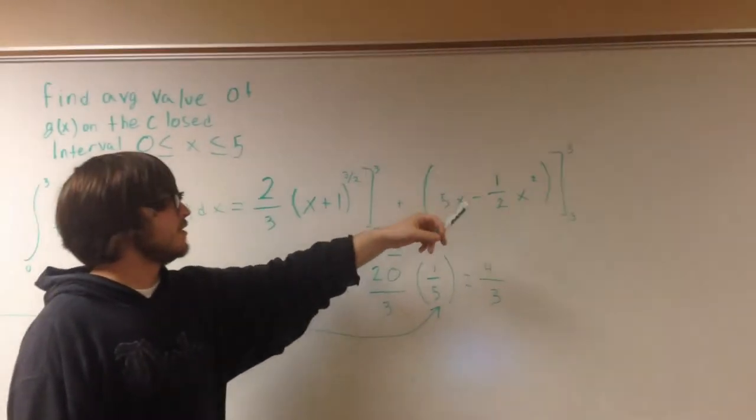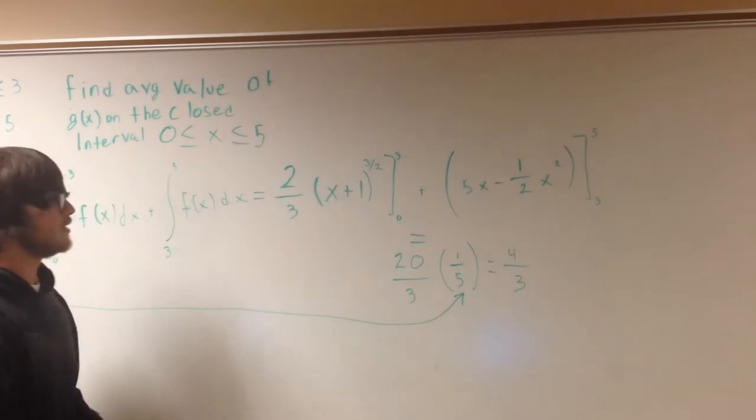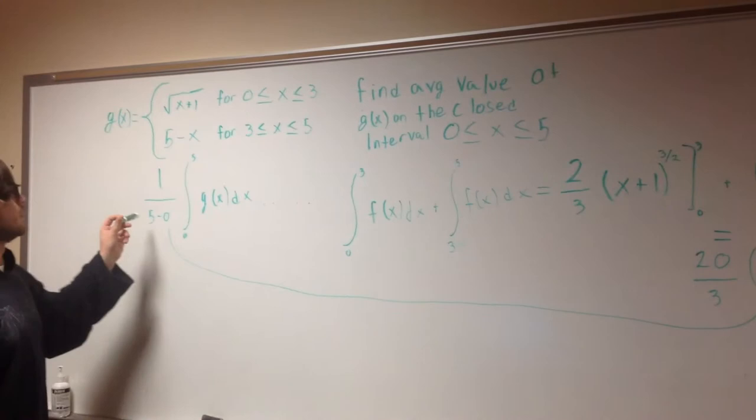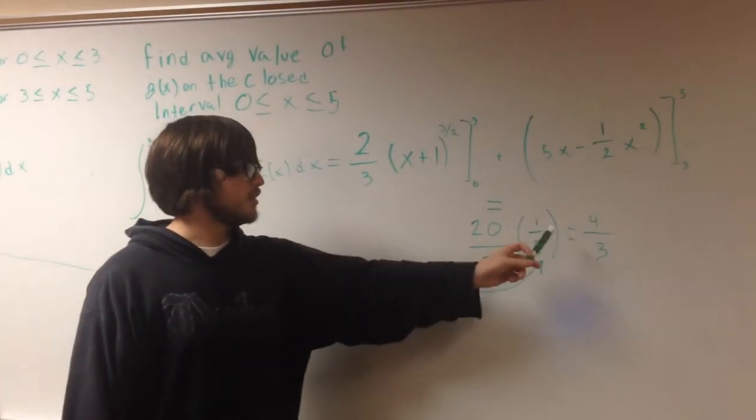It goes like this. Once you plug in the various things and add these parts together, it's going to come out to twenty-thirds, and that's when you bring back the original average value, multiply it by twenty-thirds, and you get your answer.